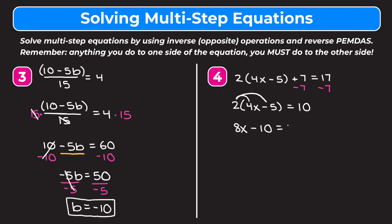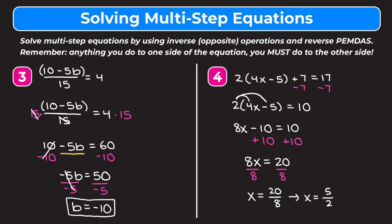We have 8x minus 10 equals 10. We get rid of the minus 10 before the 8 being multiplied, so we add 10 to both sides. On the left we're left with 8x. On the right 10 plus 10 is 20. To get rid of the 8 we divide both sides by 8. The 8s cancel, leaving x. On the right 20 over 8 simplifies — dividing top and bottom by 4 gives 5 over 2. We leave it as an improper fraction, though you can write it as a decimal or mixed number.